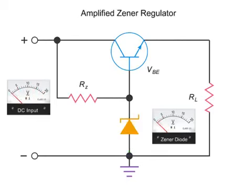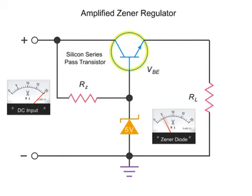In this demonstration, we'll put in 20 volts and use a Zener diode with a value of 5 volts. The regulator circuitry also contains a silicon series PASS transistor. Remember that in a transistor, the voltage value at the emitter is always 0.7 less than the voltage at the base. The base of this transistor is connected directly to our 5 volt Zener diode.